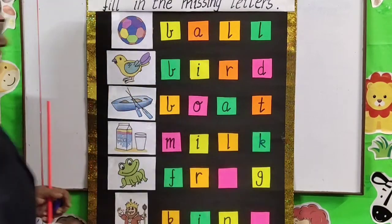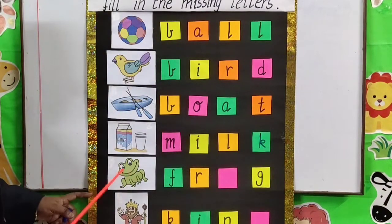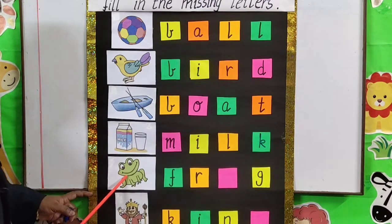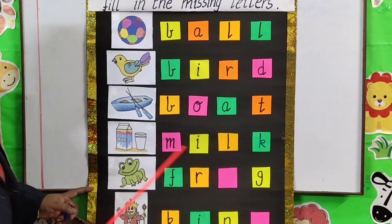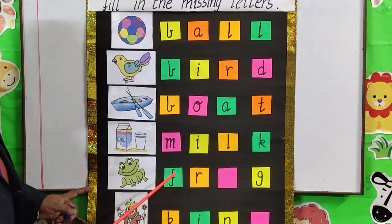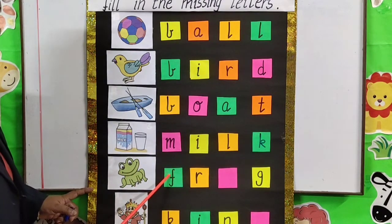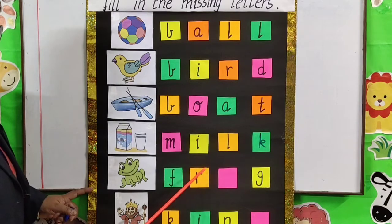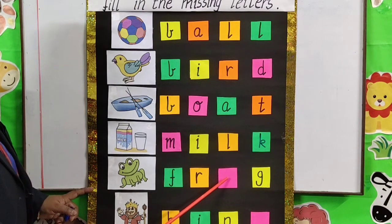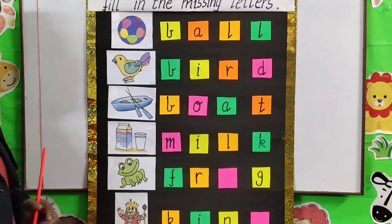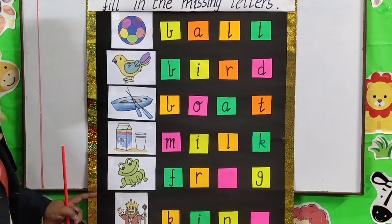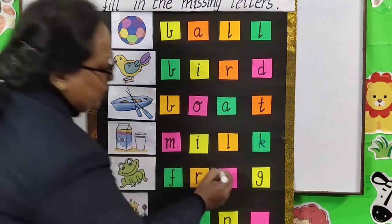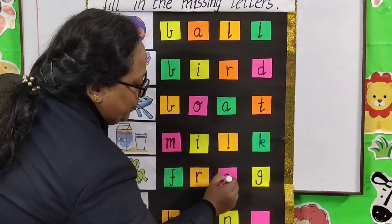Next picture. Frog. Correct. And the spelling is F-R-O-G. Which letter is missing here? O.